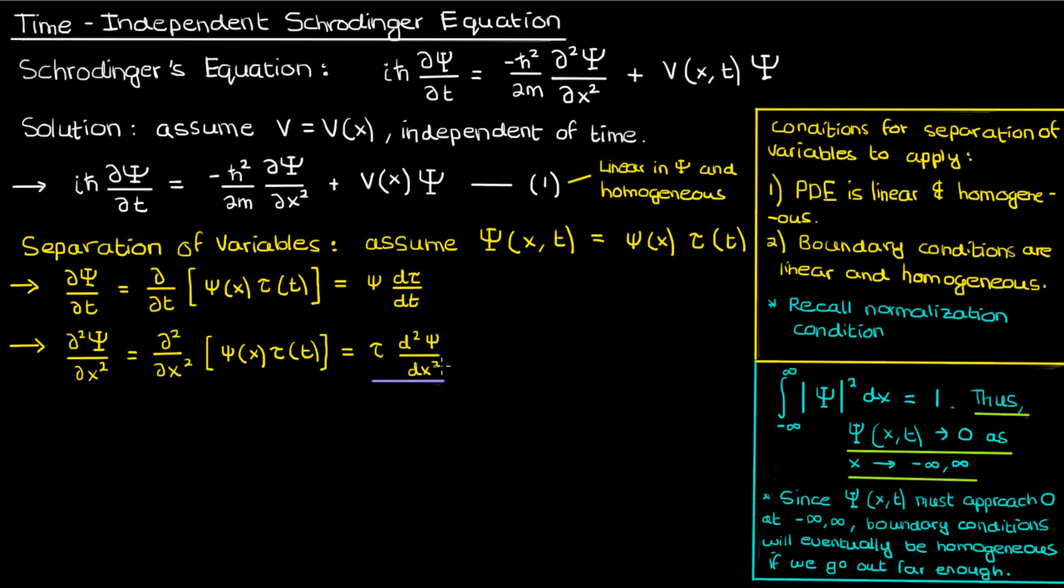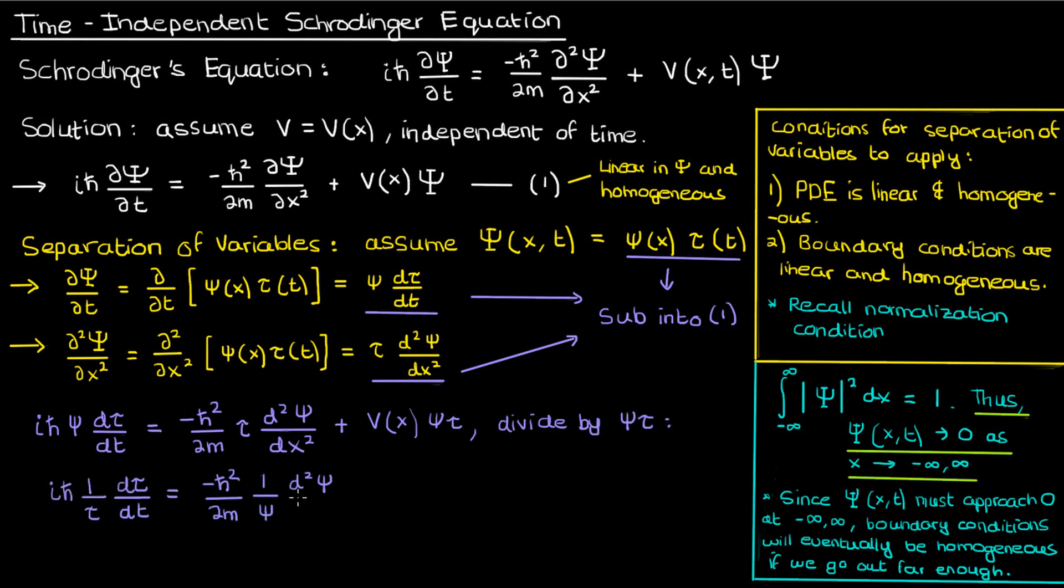Let's now take our second derivative in x, our first derivative in time, and our solution psi and substitute them all in terms of these separated functions tau and small psi. When we perform the substitution here's what we'll end up with. Let's now divide both sides by small psi times tau to end up with the following.